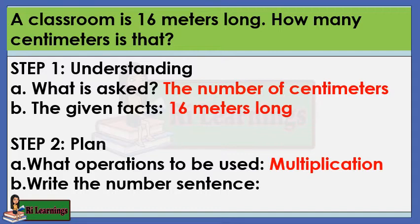Remember, to convert meter to centimeter, multiply the number of meters by 100. 16 times 100 equals N, where the letter N is the number in centimeters.